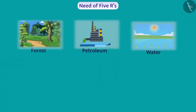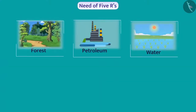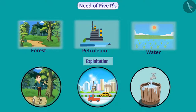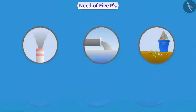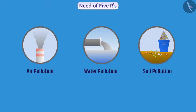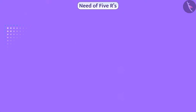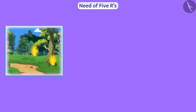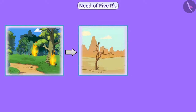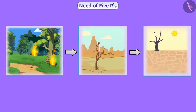Moving rapidly in the direction of development, we are exploiting these natural resources extensively. This is causing great harm to our environment. You must have seen or read about air pollution, water pollution, soil pollution and their impact on the environment. Many natural resources are limited, and due to rapid exploitation these resources are decreasing rapidly. If the speed of their exploitation is not controlled, then these resources will not be available for our future generations.